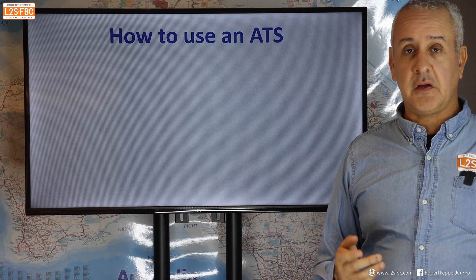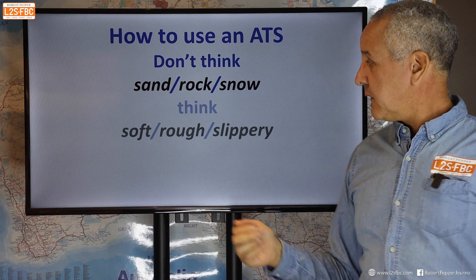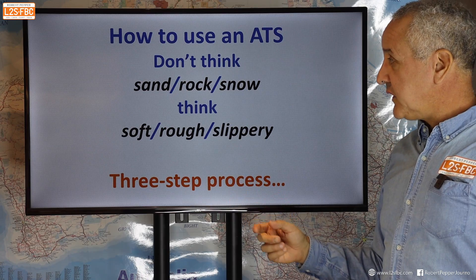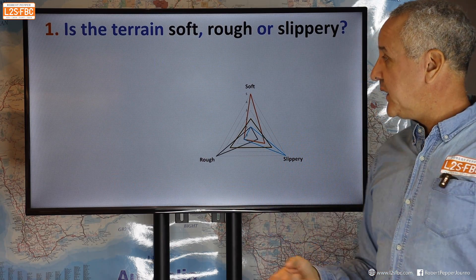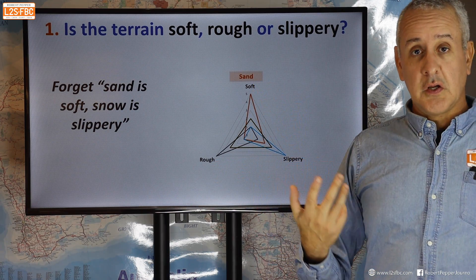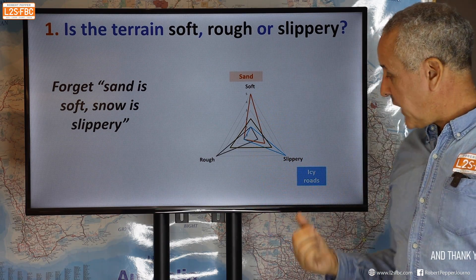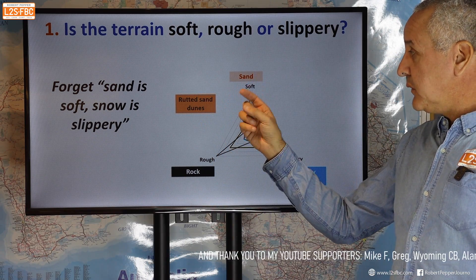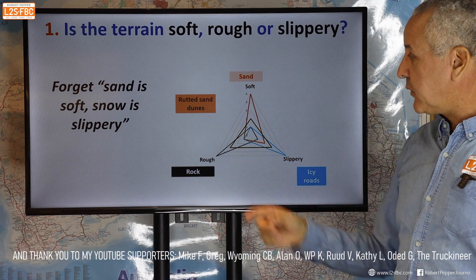So how do you use an ATS? Don't think of sand, rock, and snow — think of soft, rough, and slippery. There's a three-step process. Step one: look at the terrain and ask, is it soft, rough, or slippery? Sand is typically quite soft, but not always. Icy roads are typically slippery. Rock is typically predominantly rough. Rutted sand dunes are somewhere between rough and soft. Earthen ruts are going to be rough, but maybe a little soft as well.